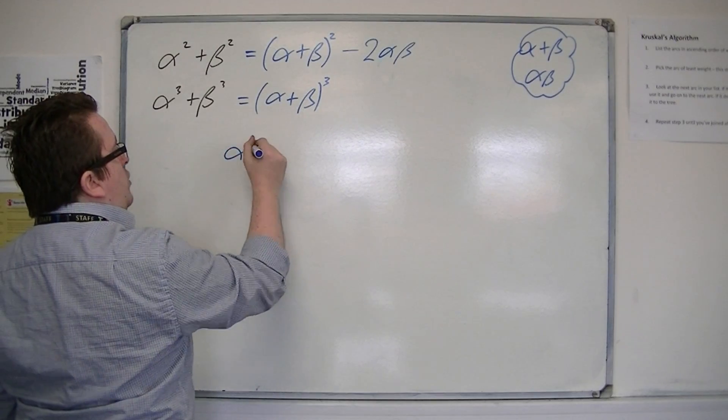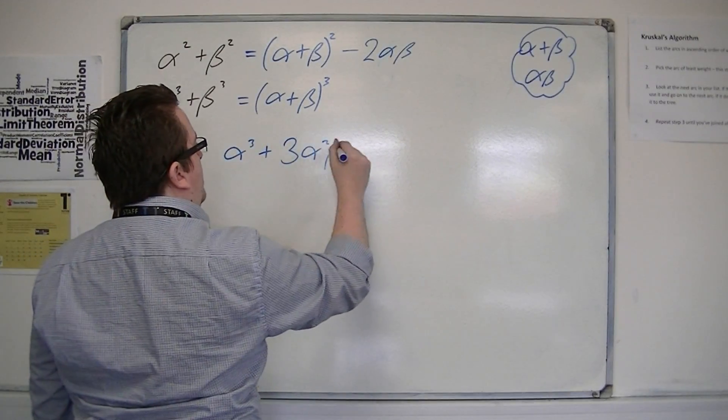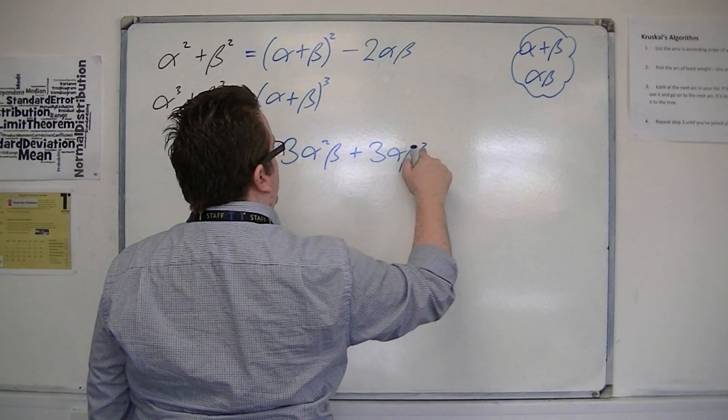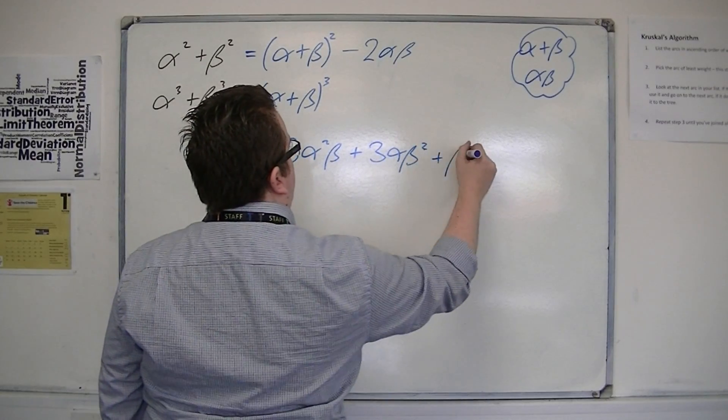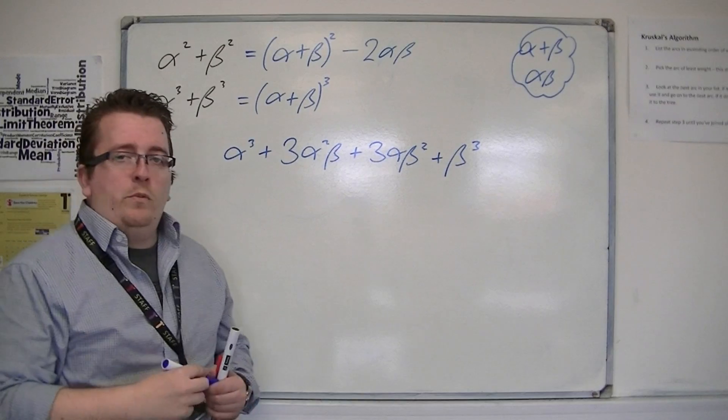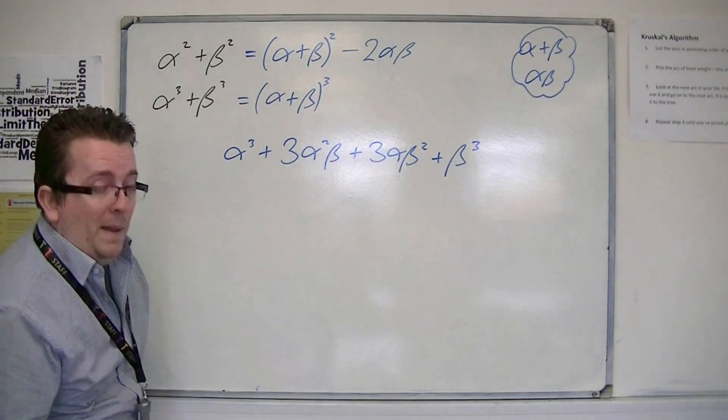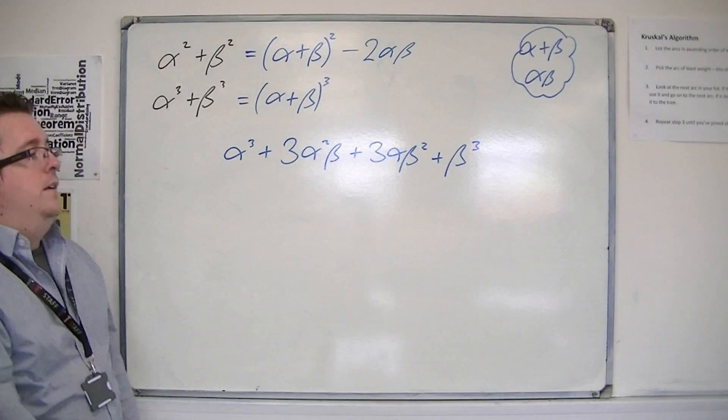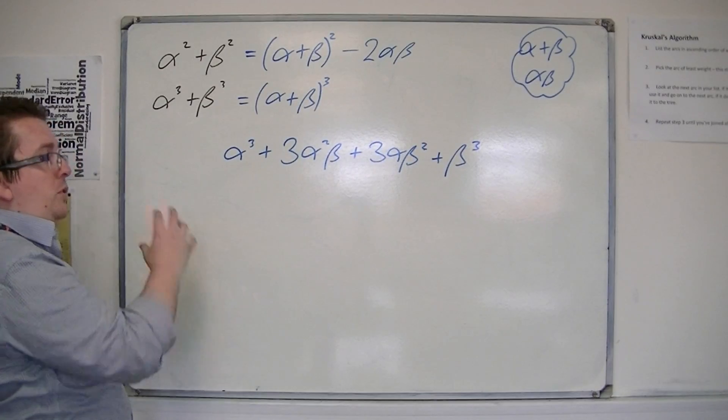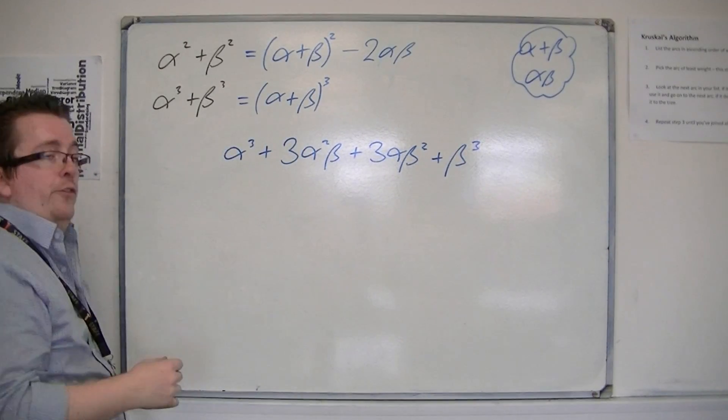you get alpha cubed plus 3 alpha squared beta, plus 3 alpha beta squared, plus beta cubed. You might be wondering how I've got that so quickly. That's from using the binomial expansion. You can test it out if you like, multiplying out triple brackets if you haven't done that before. But you should get to this final result.